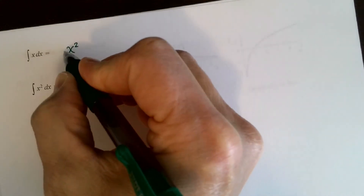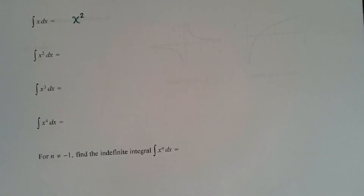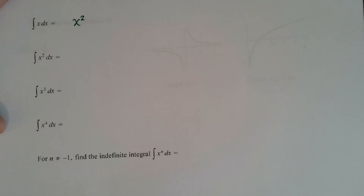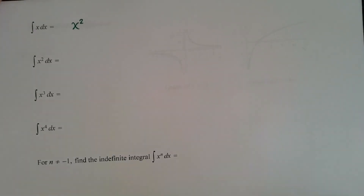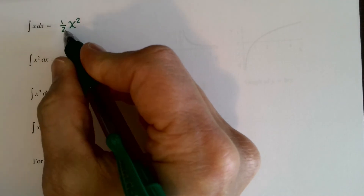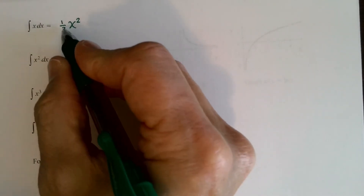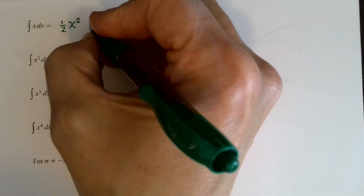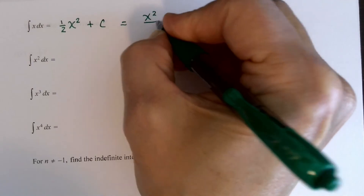The anti-derivative of x: we said 2x gives x squared, but if I try x squared for just x, bringing the 2 down gives 2x — there's only 1x here. So we need to multiply by one-half, so that 2 times one-half equals 1, giving x to the first power. So the anti-derivative of x is one-half x squared plus c, which can also be written as x squared divided by 2.